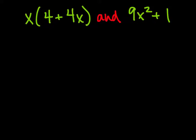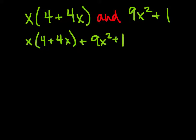Let's rewrite our expression so it's one expression being added together with the other: x(4 + 4x) + 9(x² + 1).